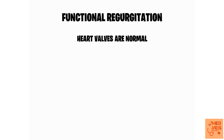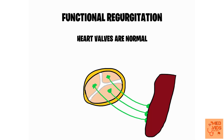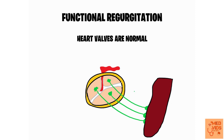There is another condition called functional regurgitation. Here the heart valves are actually normal, but regurgitation takes place because of weakness in the supporting structures that anchor the cardiac valves to the ventricles. These structures include the chordae tendineae and the papillary muscles. If they are not strong enough, they cannot hold the valves in their intact position, allowing backflow of blood into the previous chamber.